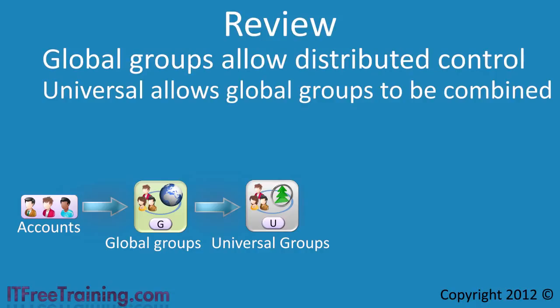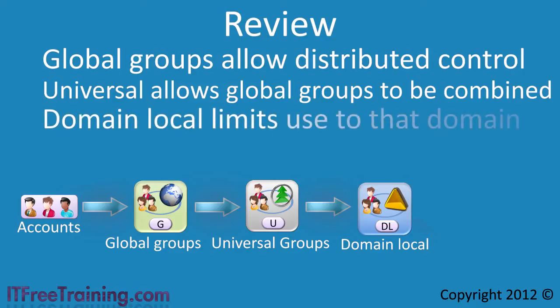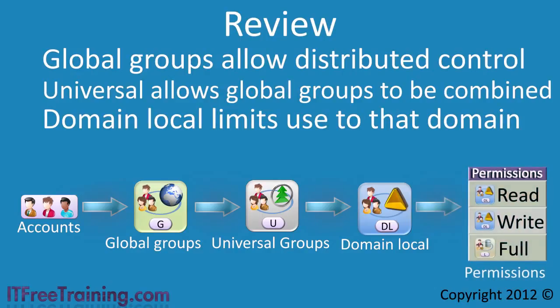Next, the universal group is put into a domain local group or domain local groups. Domain local groups are local to the domain and can only be used in that domain, which limits their use and allows better control and auditing. Using this approach allows an administrator to quickly remove or add access to as many or few groups in that domain as required. The domain local group is then applied to the resource as a permission, allowing the local administrator to control how permissions on the resource are managed. At any time you can look at the membership of the domain local groups and audit access to the resource.